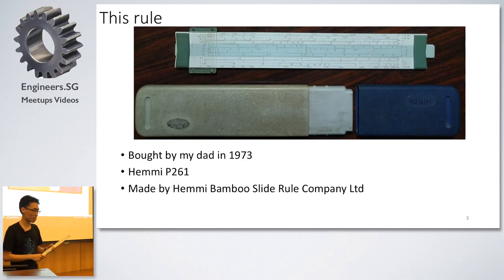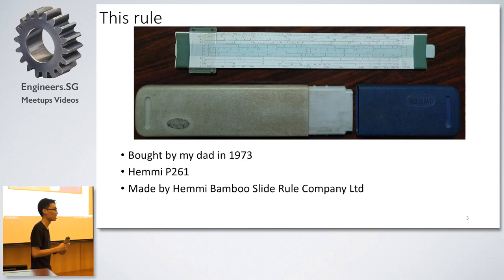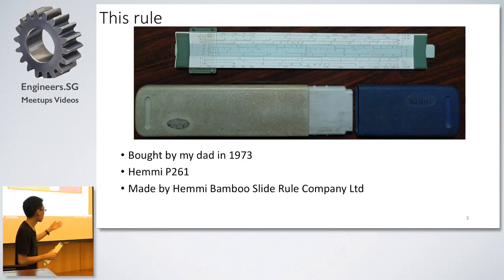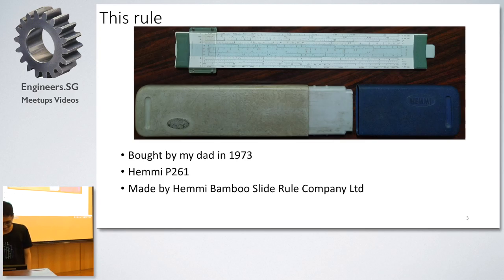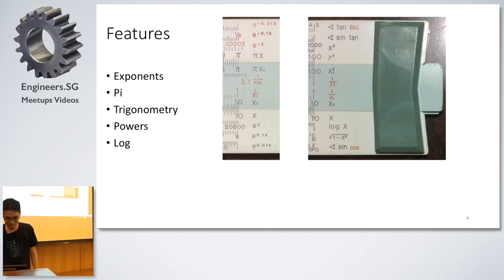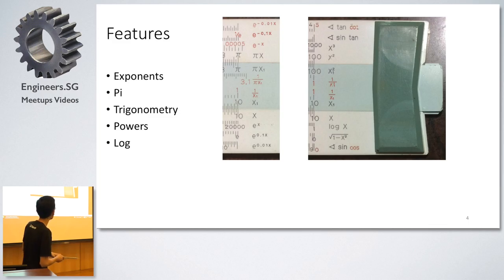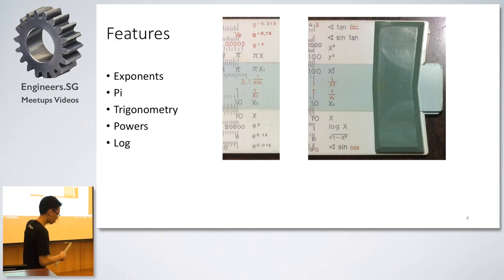This rule — actually this is not mine, this is my dad's one. He bought it in 1973. The model is Hemi P261 by this company, and obviously this company does not exist anymore. So I took some close-up pictures. You can see you can do exponents, pi, trigonometry, powers, and log — you can see over there.